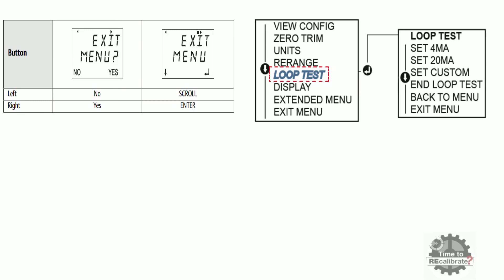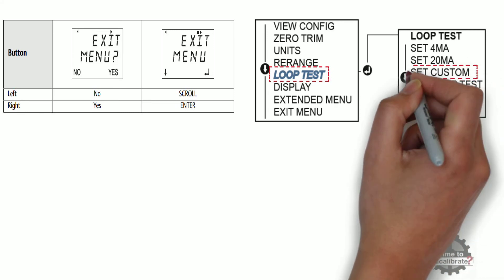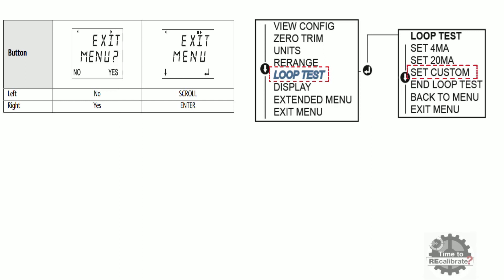We will do three points loop test. So, select set custom option and press RH button to enter in this menu.